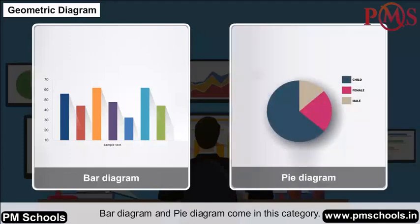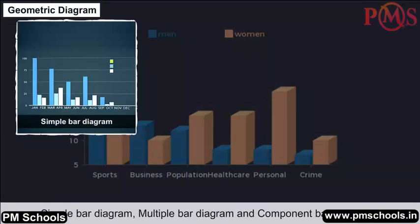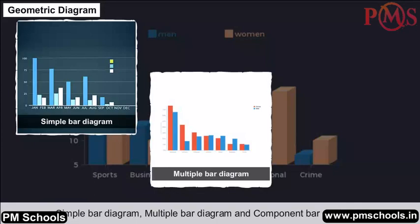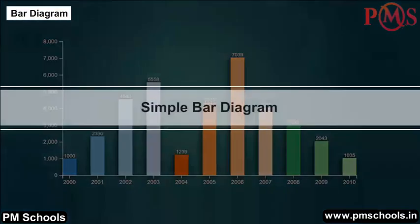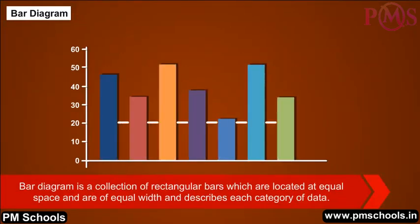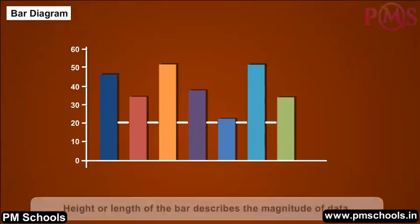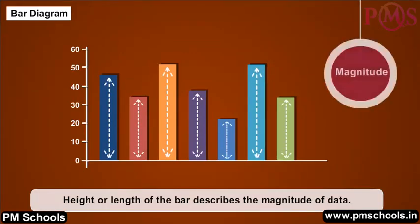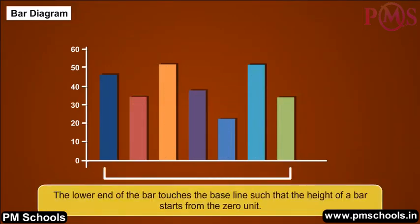Geometric diagram — Bar diagram: Bar diagrams and pi diagrams come under geometric diagrams. Bar diagrams are of three types: simple bar diagram, multiple bar diagram, and component bar diagram. A bar diagram is a collection of rectangular bars which are located at equal spacing and are of equal width, describing each category of data.